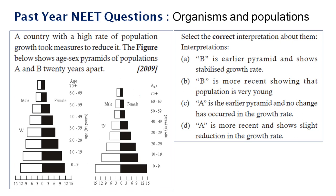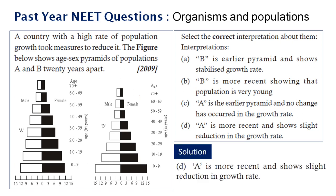If you look at A and B and closely watch, A is more recent and shows a slight reduction in the growth rate. Compare A with B and you will know the difference. A is more recent and shows a slight reduction in the growth rate, therefore the right answer is option D.